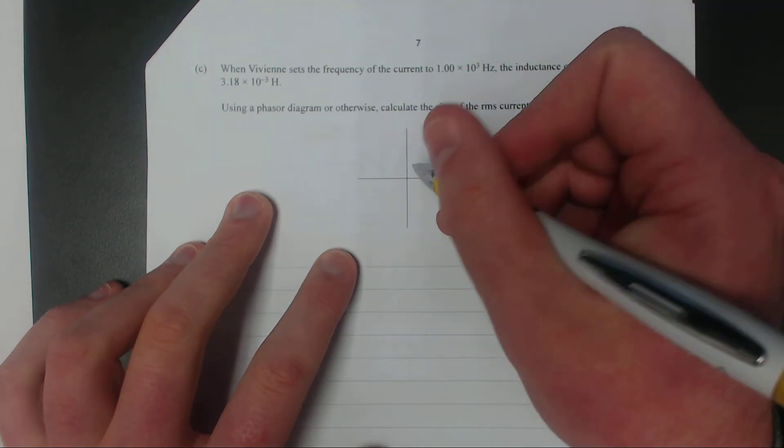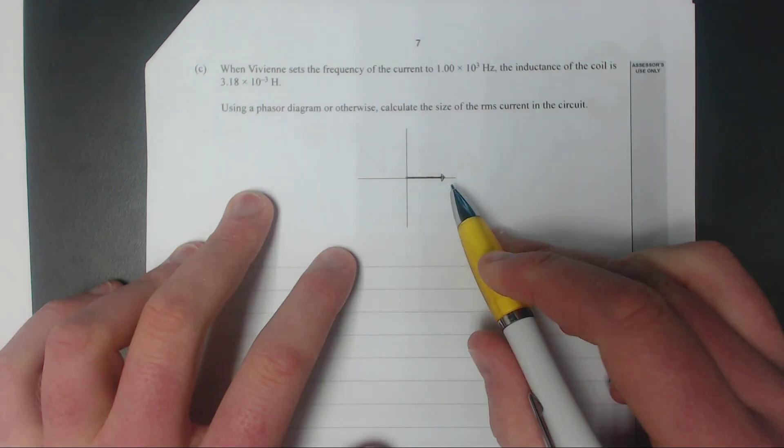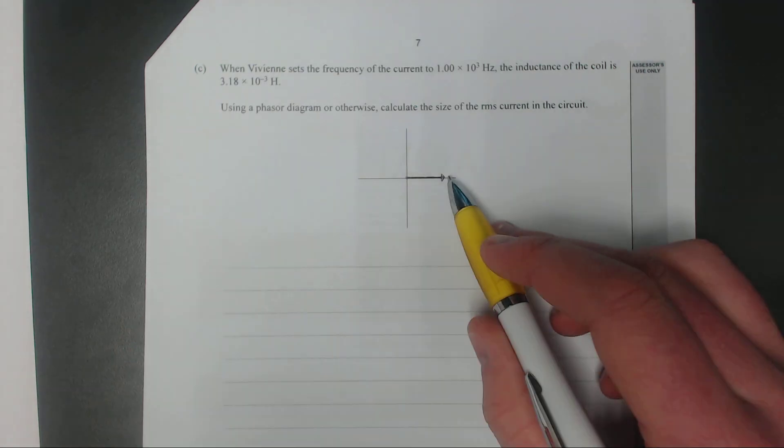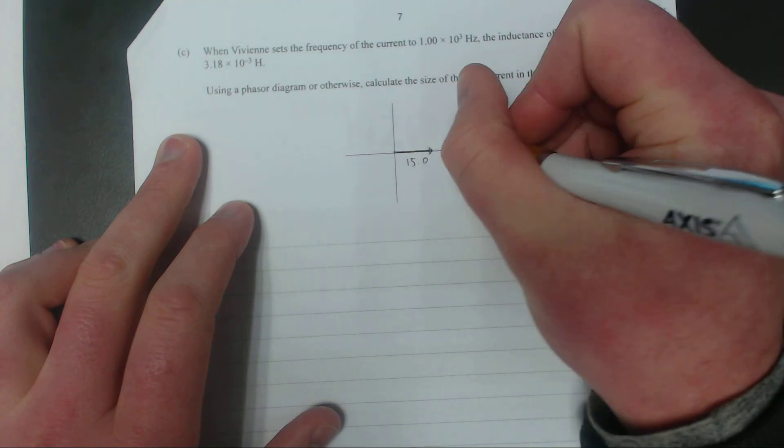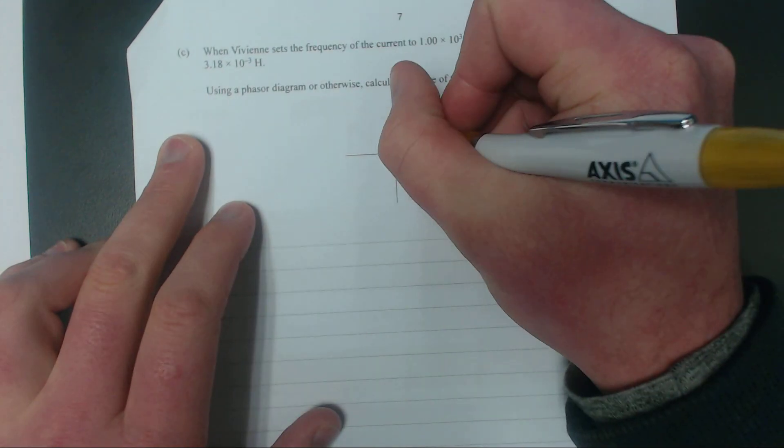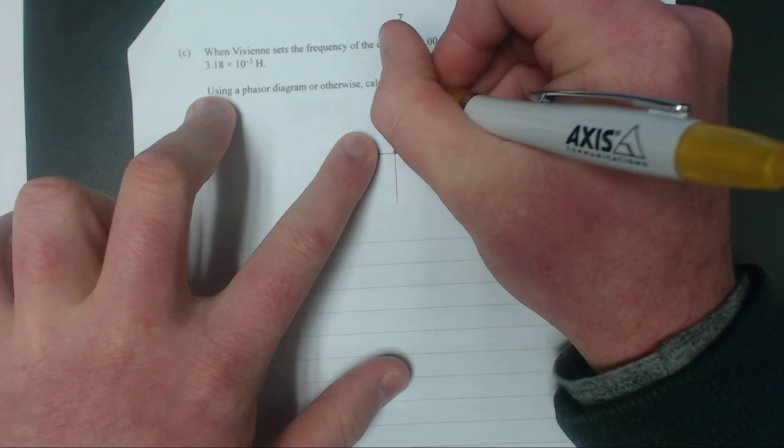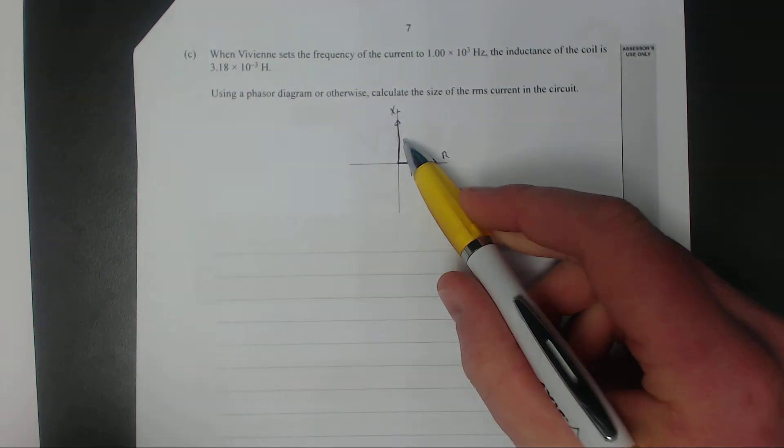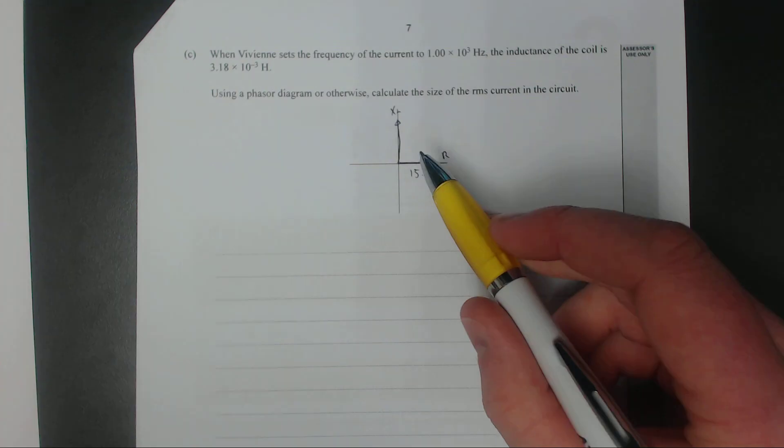The resistance of the resistor starts at the start of your Argand diagram. That's 15 ohms. Your reactance of the inductor XL acts 90 degrees in front of the resistance of your resistor. That's just a property of the inductor.